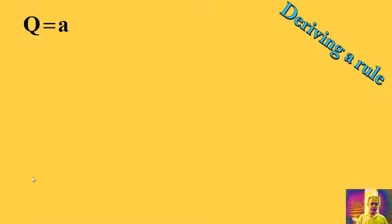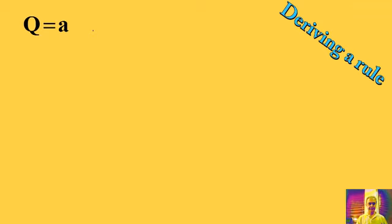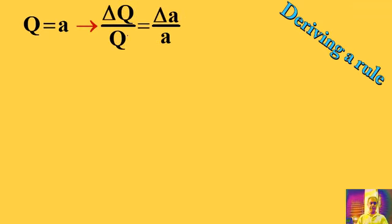Deriving a rule. Suppose that q is equal to a. Delta q over q, the fractional uncertainty for q, is equal to delta a over a.